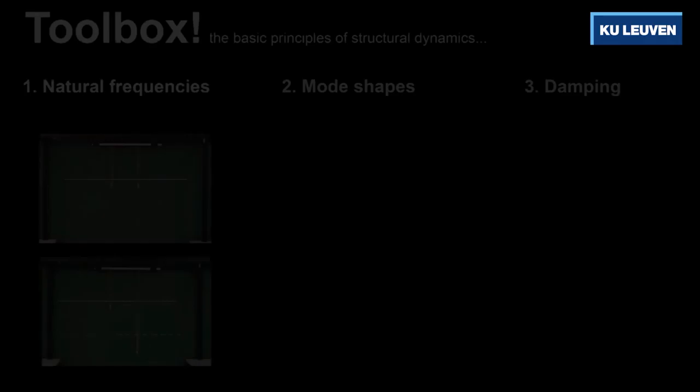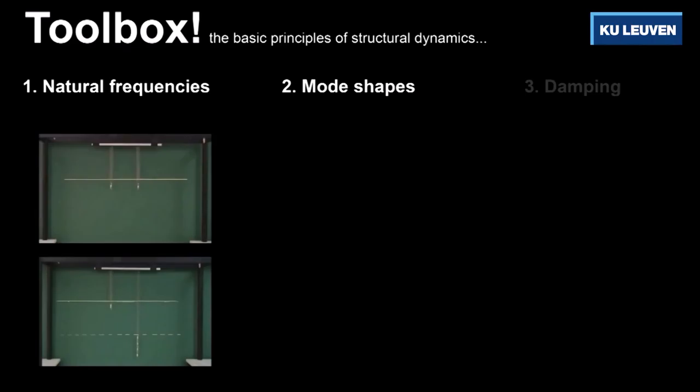We should add that the spring mass systems that are shown here have only one natural frequency. On the other hand, real structures like bridges and buildings have multiple rhythms or natural frequencies at which they like to vibrate.